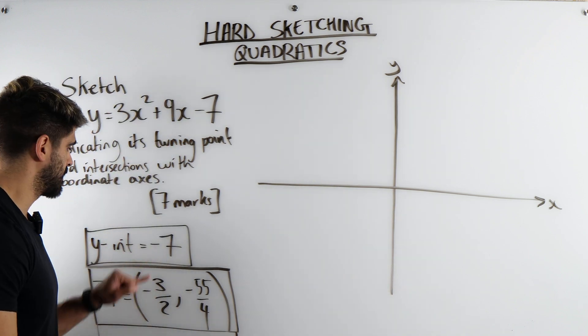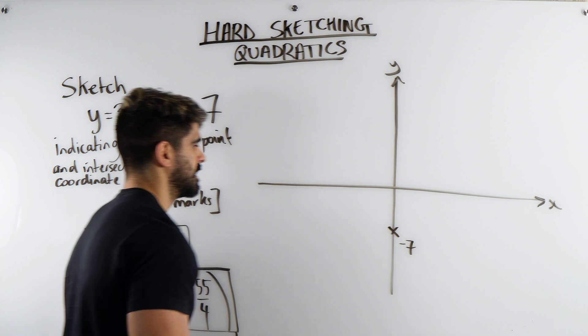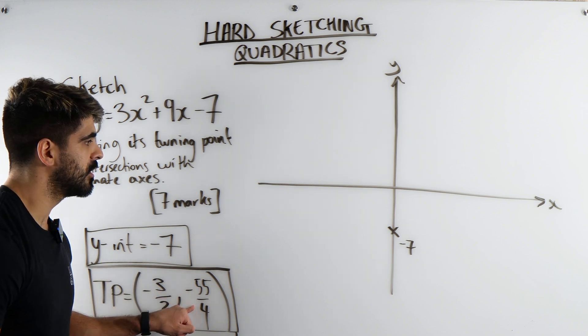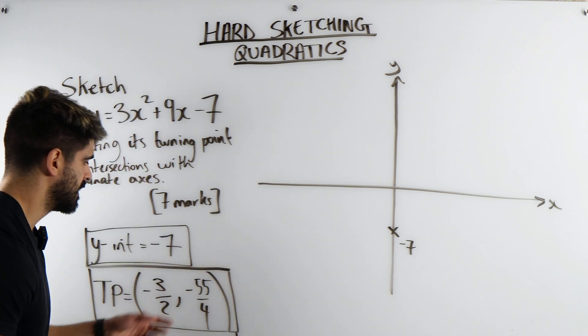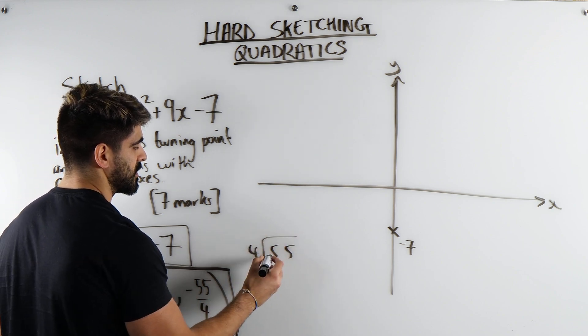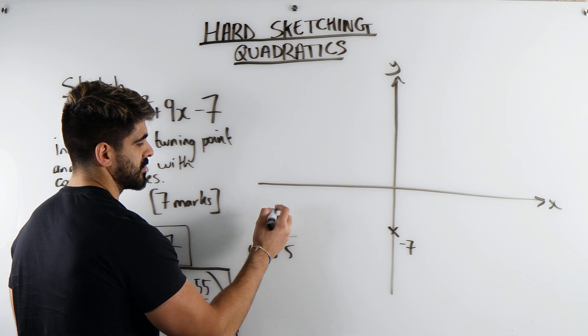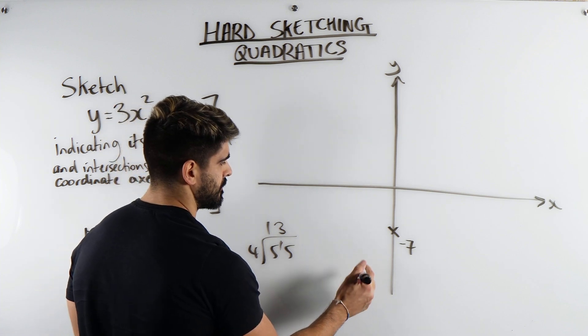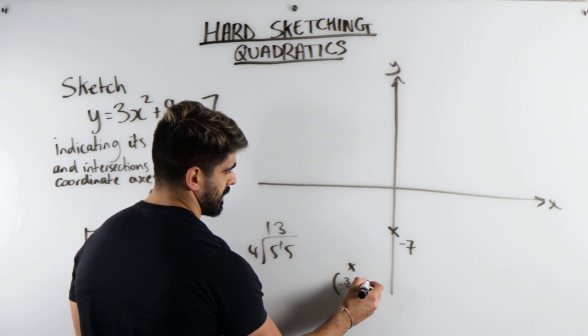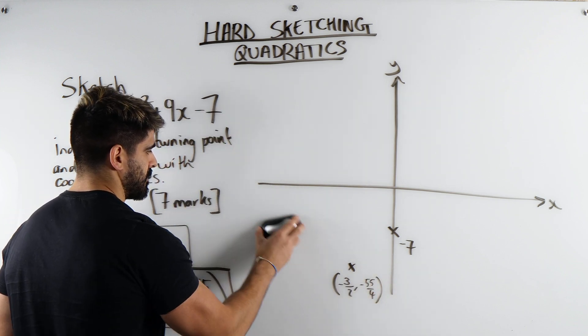However big you want to do it. Plot these two first. Put a cross at -7. And put a cross here at -1.5, -55/4. Now, -55/4 is going to be lower than -7. I mean, you could work it out. You could say, how many 4s go into 55? 4 goes into 5 once with a remainder of 1. 4 goes into 15 three times and then it has remainders, right? And that's the negative. So it's going to be somewhere down here. So somewhere here. So this is my -3/2, -55/4.